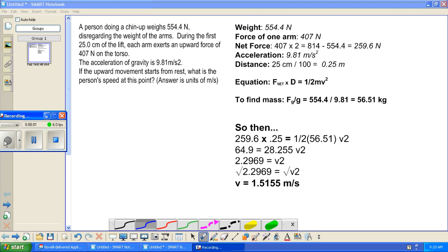A person doing a chin-up weighs 554.4 newtons. Disregarding the weight of the arms, during the first 25 centimeters of the lift,